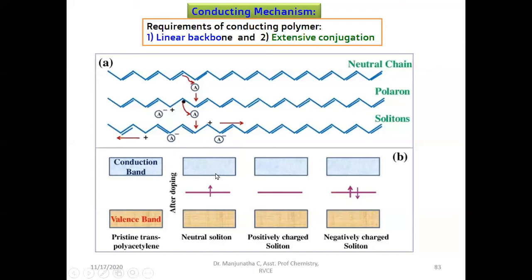This is a neutral soliton. When you take out this electron, it creates a hole. This is called positively charged soliton. If you add one electron to this, it becomes negatively charged soliton.